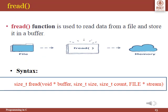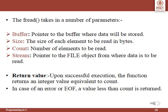The fread function is used to read data from a file and store it into a buffer or memory. Its syntax takes four parameters: buffer, size, count, and stream. Buffer is a pointer to the location where the data will be stored — a region of memory used to temporarily hold data. Size indicates the size of each element to be read in bytes. Count is the number of elements to be read. Stream is a pointer to the file object from where the data is to be read.